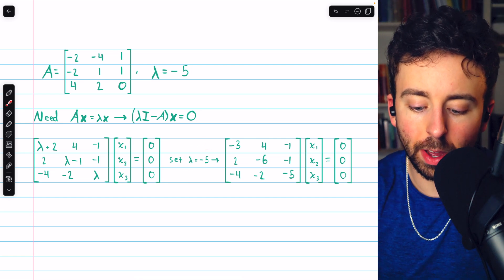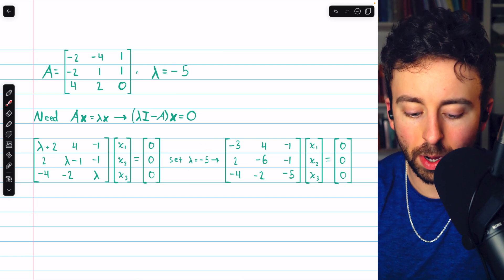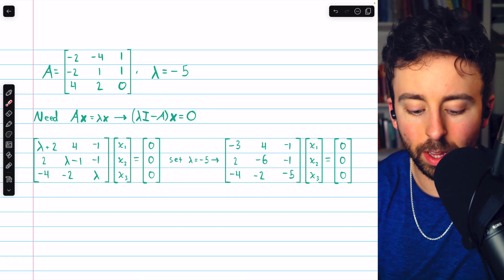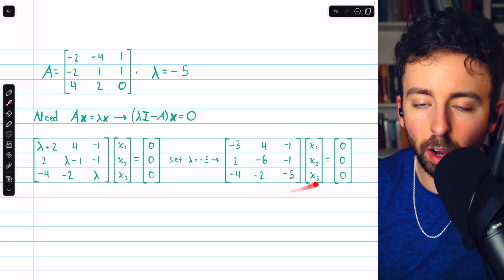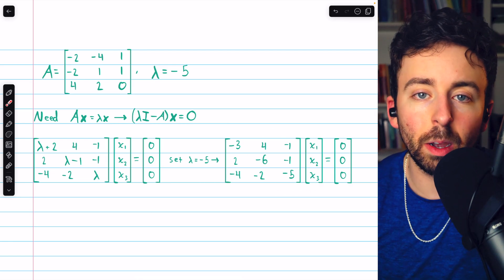We then set lambda equal to negative five. That's the given eigenvalue. So negative five plus two, negative three. Negative five minus one, negative six, and so on. So now we just have to solve this system, which we can do using Gauss-Jordan elimination.